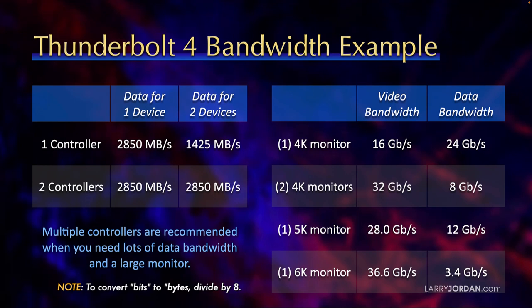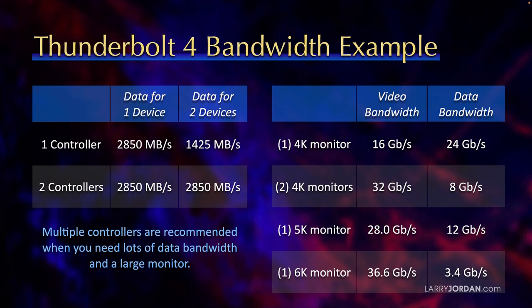But if I plug in two 4K monitors, that data bandwidth drops to only 8 gigabits per second, because video data takes priority over digital data. If I plug in a 5K monitor, that requires 28 gigabits per second, leaving 12 gigabits per second for data bandwidth. If I plug in a 6K monitor, that's 36 gigabits per second, leaving only 3 gigabits per second for data. So the larger the monitor size plugged into a controller, the less of that controller's bandwidth is available for data.